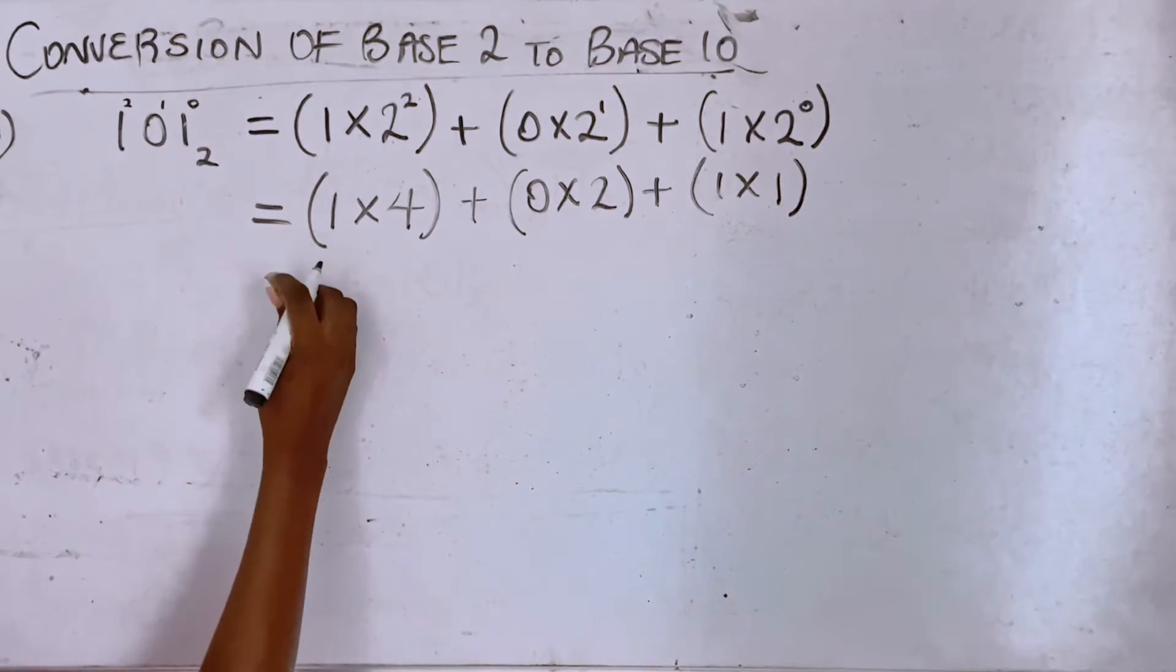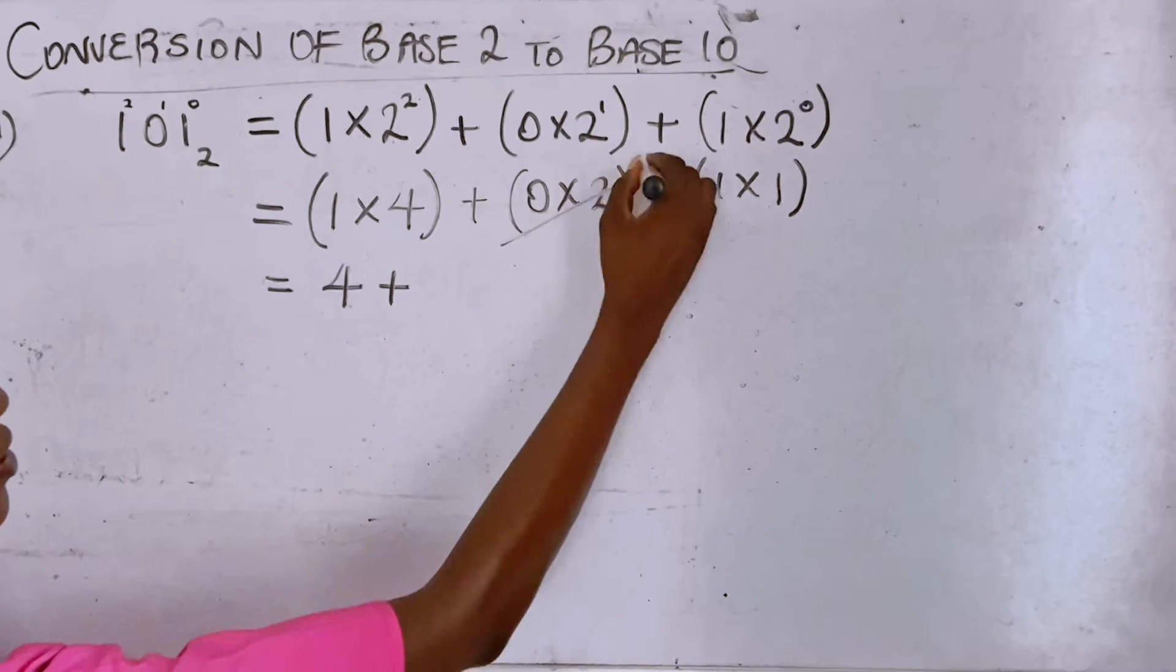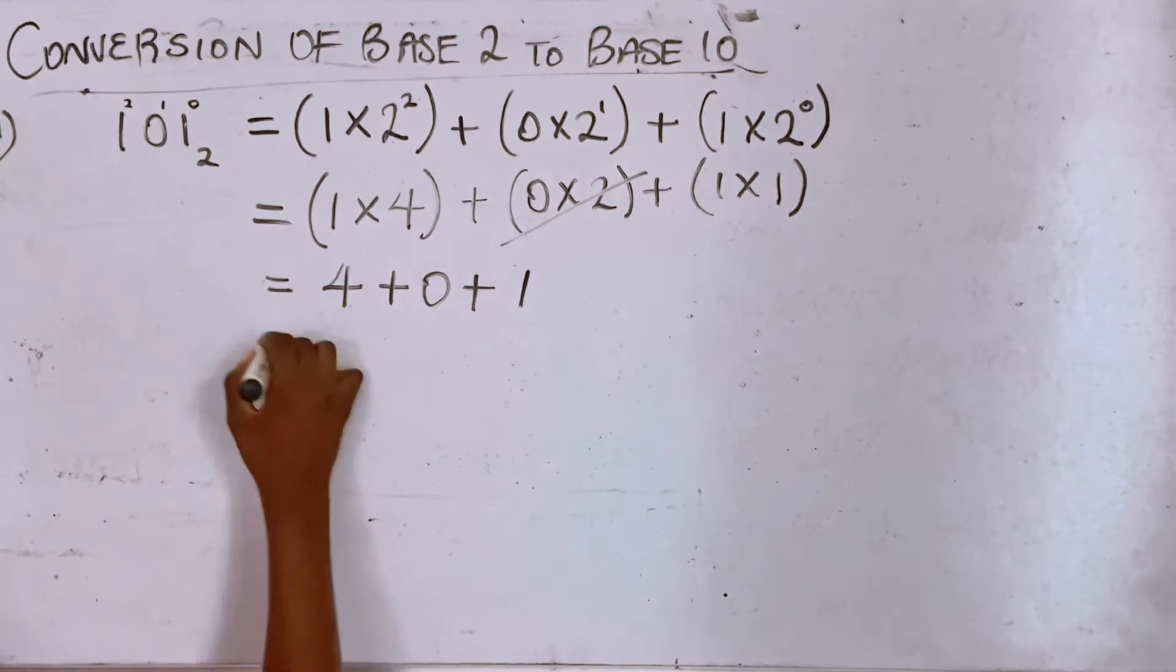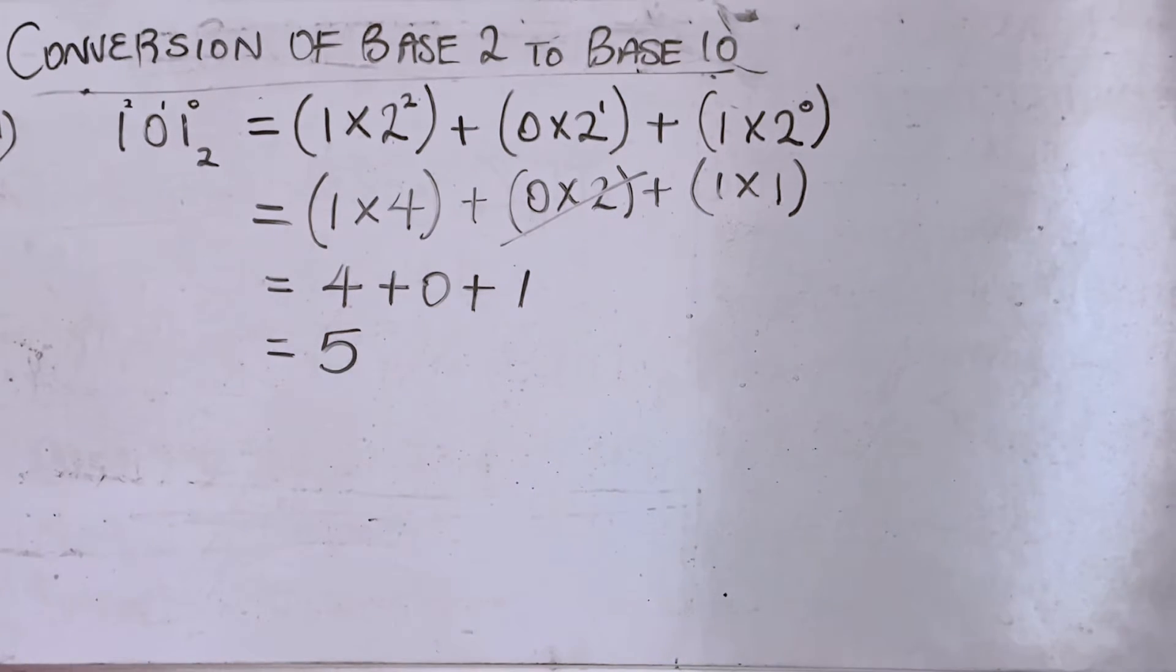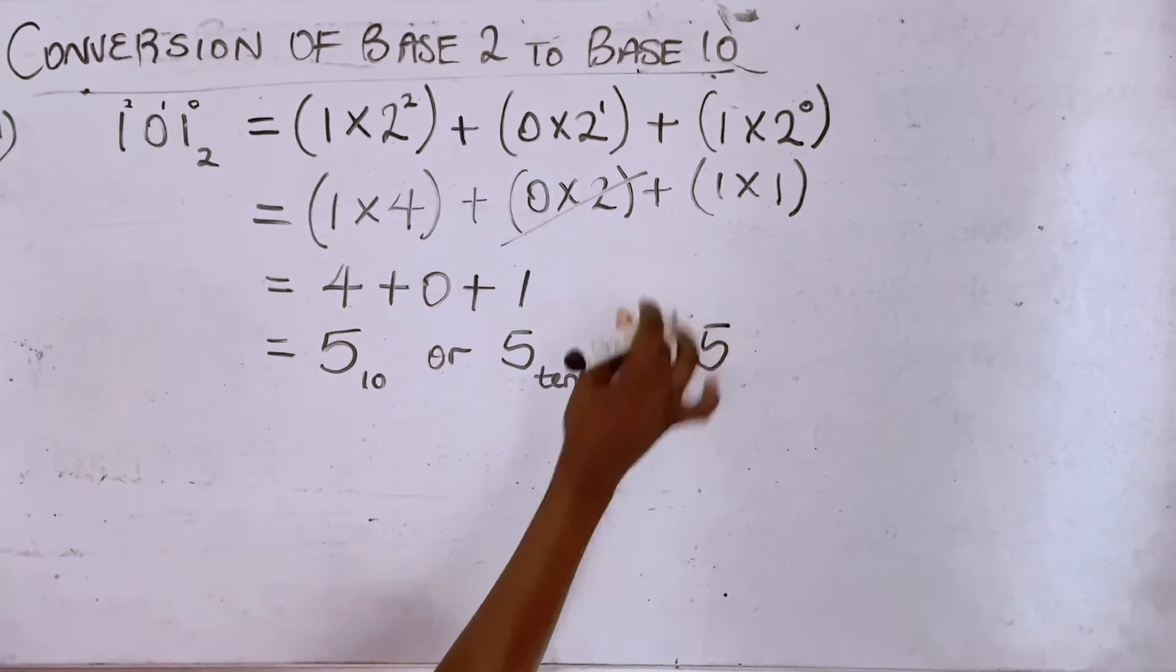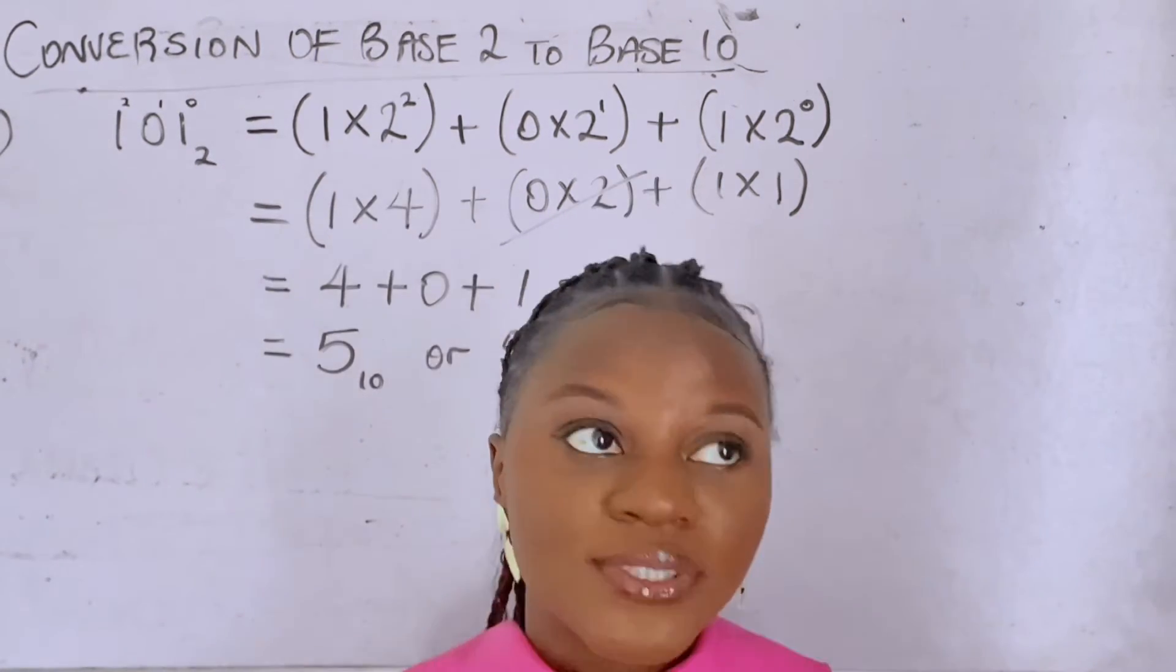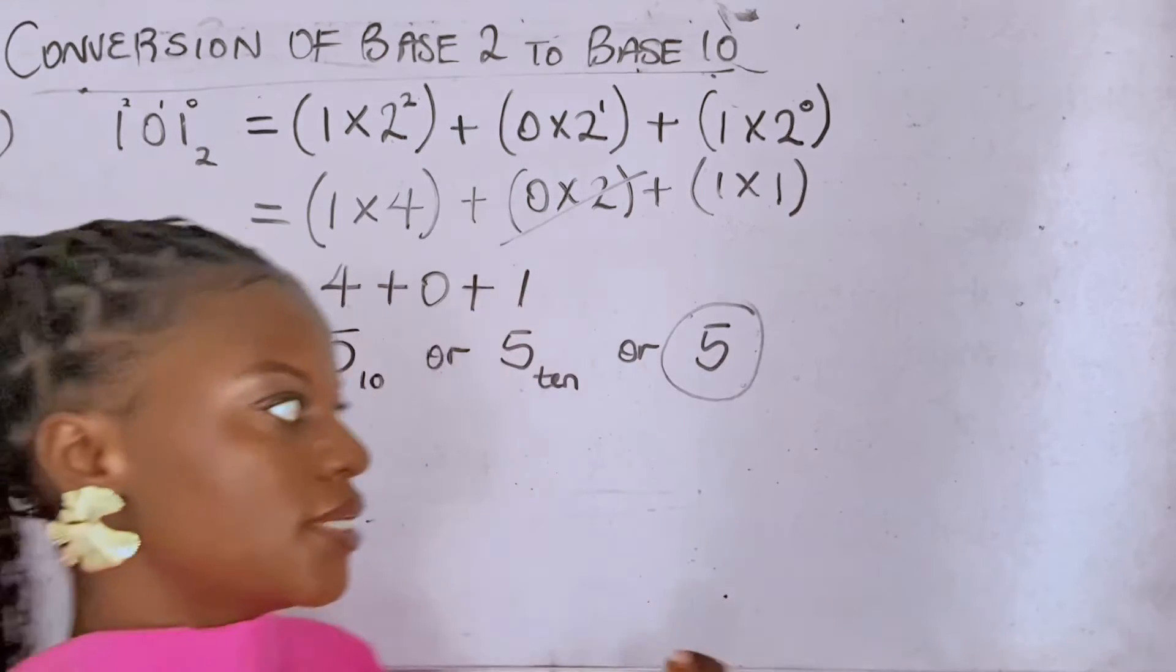And then you continue. One times four is four, zero times two, of course zero multiplied by anything is zero, and then one times one is one. So four plus zero is four, four plus one is five. So you could write it with its base 10 subscript in words or you could just write it like this because we said that any number in base 10 is the number we use every day, so you could decide not to indicate the base.